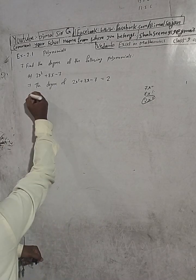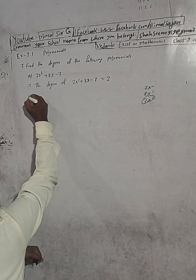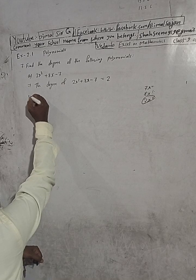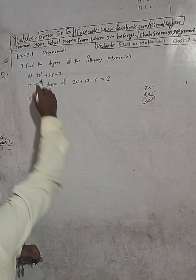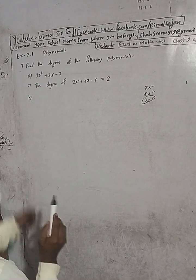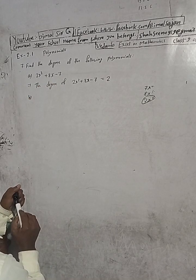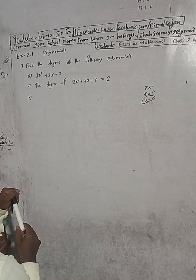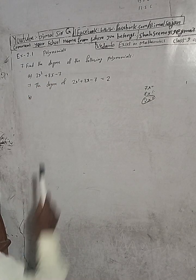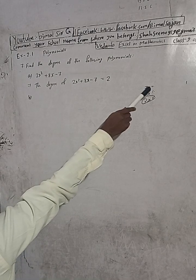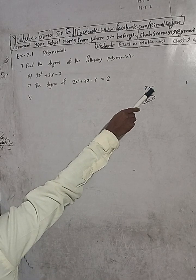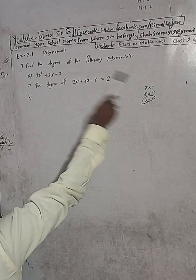Now, B number. For a constant term polynomial, we call it 0x to the power 0, so the degree of a constant polynomial is 0.